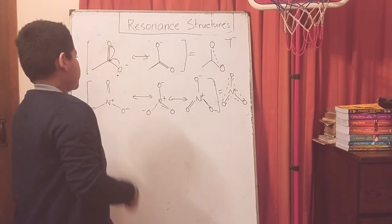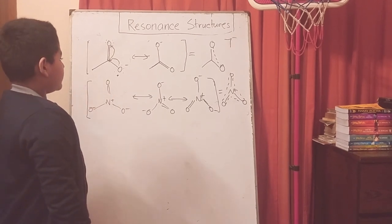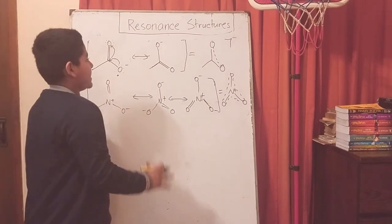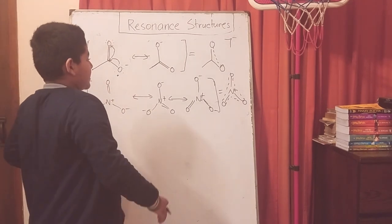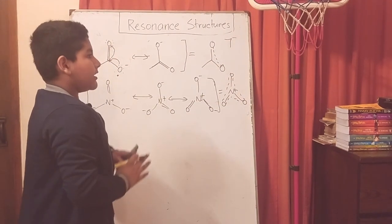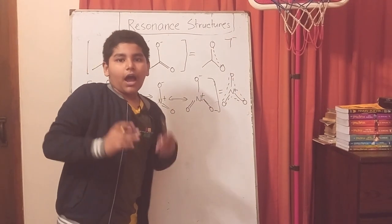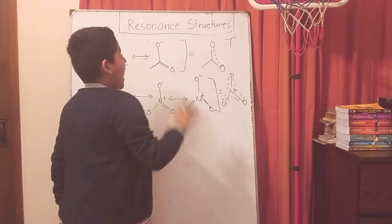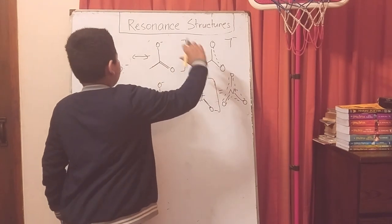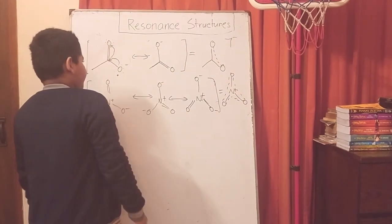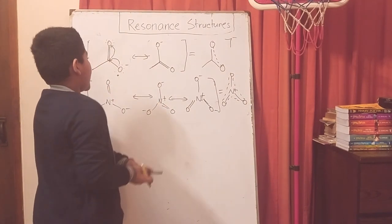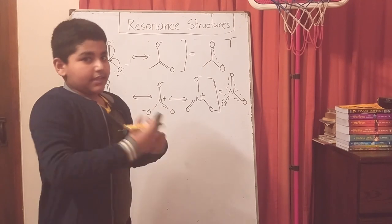Remember, individual resonance structures do not exist. What exists is a composite resonance structure with the partial pi density distributing on that portion of the molecule with the formal negative charge. We draw it in the individual way to understand the molecule and the chemistry of the molecule.